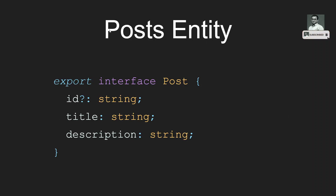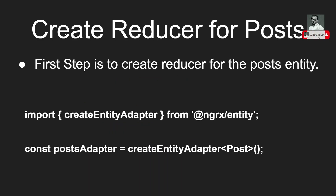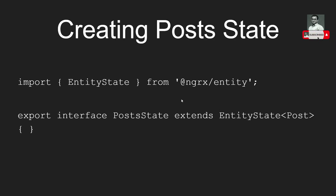In our project we have the post entity. The post interface has ID, title, and description. Now to create a reducer for the post entity using NGRX Entity, first we create the adapter: `const postAdapter = createEntityAdapter<Post>()`, where `createEntityAdapter` is imported from NGRX Entity.